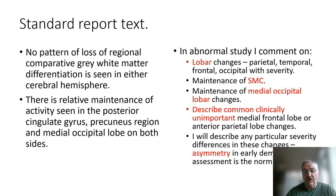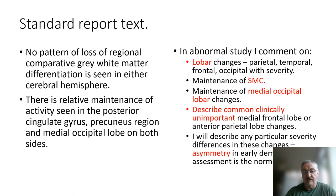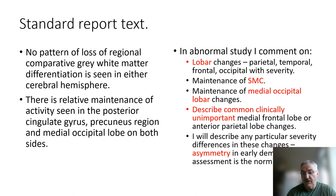In an abnormal study, we're going to describe the lobar changes and whether there's maintenance of sensory motor cortex activity. Generally, if there is loss of sensory motor activity, it suggests both parietal and frontal lobe changes. We'll talk specifically about whether there's maintenance of medial occipital lobe, which can be important in dementia with Lewy body. I'll encourage you to describe common but clinically unimportant changes — for example, medial frontal lobe changes are very common, and anterior parietal lobe changes on their own are very common even in young patients. I'll describe the severity of each change as mild, moderate, or severe, and describe the asymmetry.